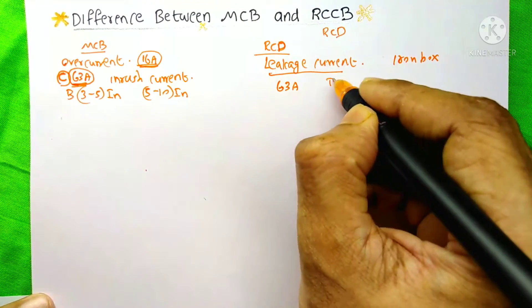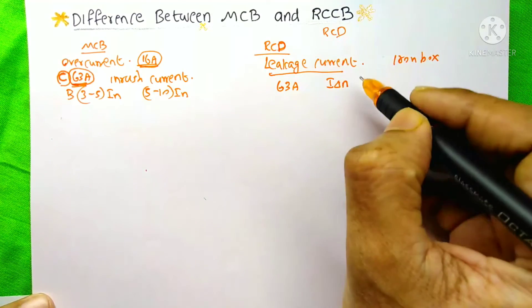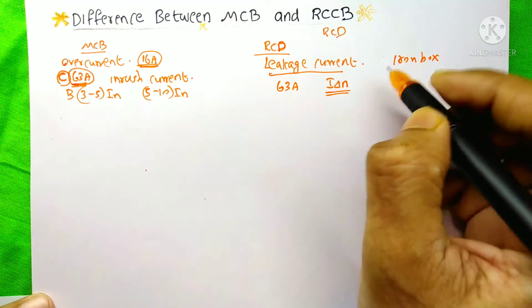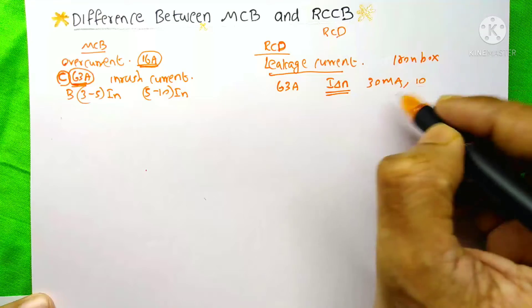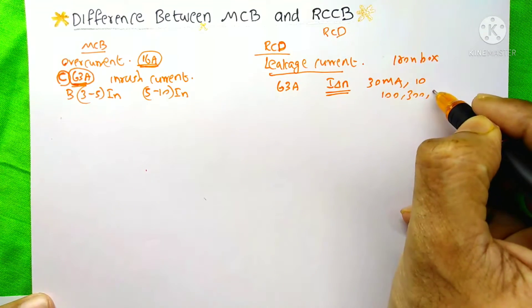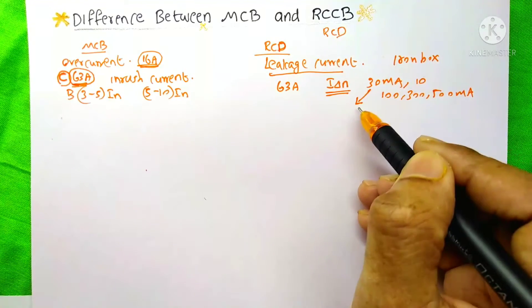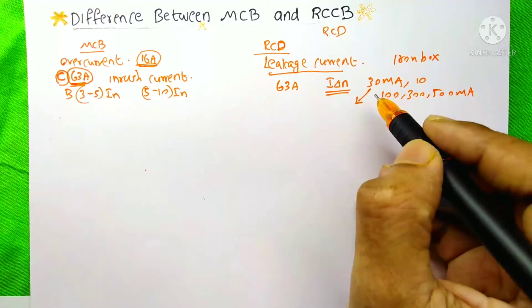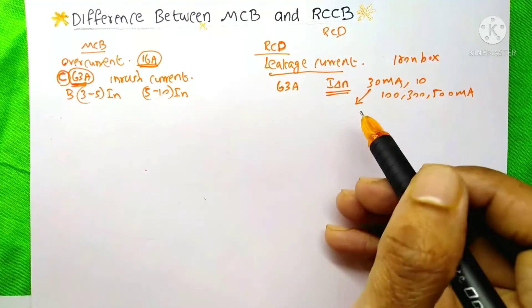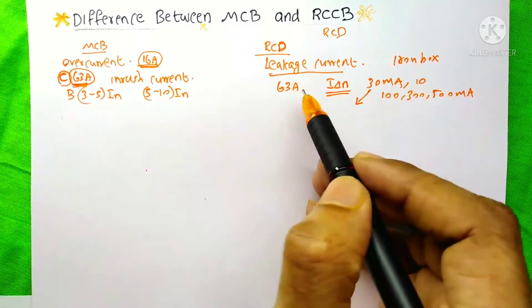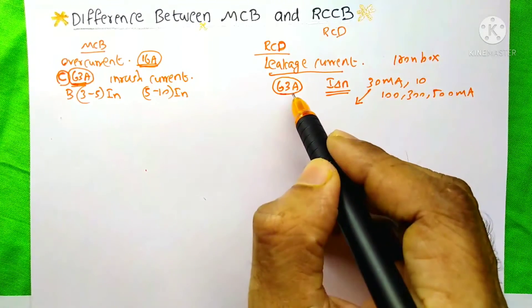But here in the RCD, you can see an extra thing that is this I delta N. This I delta N has 30 mA or 10 mA, 100 mA, 300 mA, 500 mA. Suppose our RCD is for this 30 mA, then if our circuit's leakage current is more than this 30 mA, then the RCD will trip and protect us. And here for the RCD, only up to 63 ampere current is available in the market.